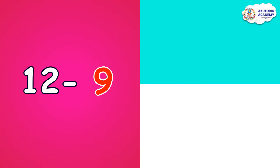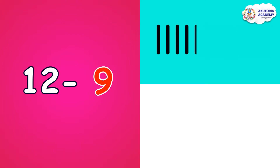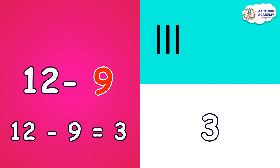Let's take another example. We have twelve minus nine, and we have twelve sticks here. We're going to take away nine sticks: one, two, three, four, five, six, seven, eight, and nine. How many sticks are left? Let's count: one, two, three. We have three sticks left from twelve. So twelve minus nine equals three.